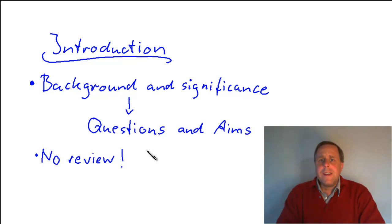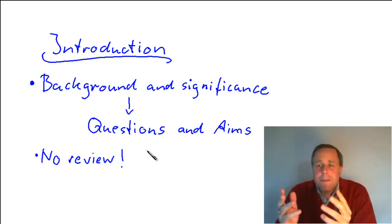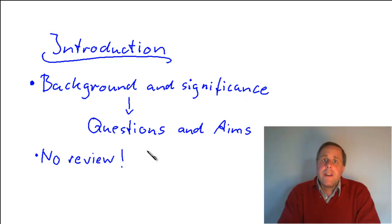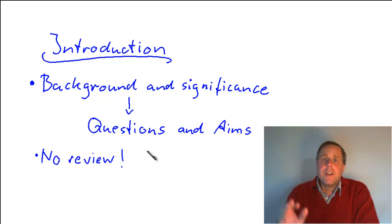So ideally, you guide the reader by bringing up those most important pieces of background to understand the significance of your study and then make it a very natural consequence of that background that you are now raising that question and that you are now pursuing that aim. That would be the ideal introduction. It should all lead to those questions and aims to be described in the final section of the introduction chapter.